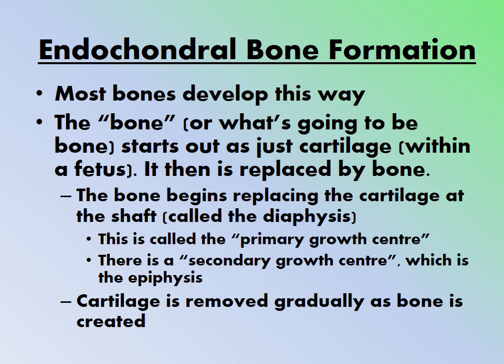In endochondral bone formation, most bones begin as cartilage within the fetus. In a pregnant dog, you won't see fetal bones on x-ray until the third trimester because bone formation hasn't occurred yet — the structures are still cartilage. As the fetus develops, cartilage gradually ossifies into bone. The primary growth center is at the shaft of the bone, called the diaphysis, and there is also a secondary growth center at each end called the epiphysis.